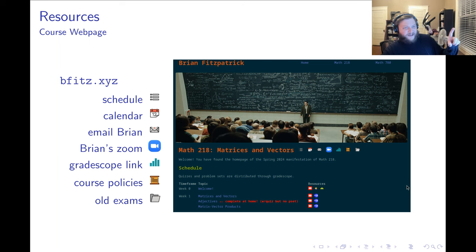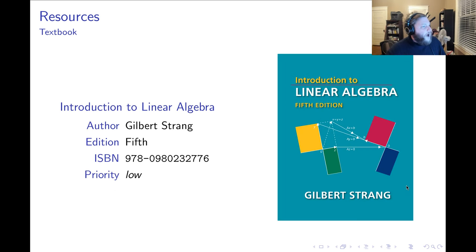Now, what about resources? Everything you need for the course is actually on the course webpage. Everything has been written by me. However, if you want an additional optional resource, the classic textbook for our subject is Gilbert Strang's famous Introduction to Linear Algebra. So if you want an additional resource, you can pick this up, but this is by no means necessary. I don't assign anything out of this book, so you don't need it.